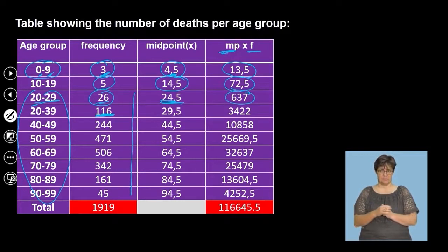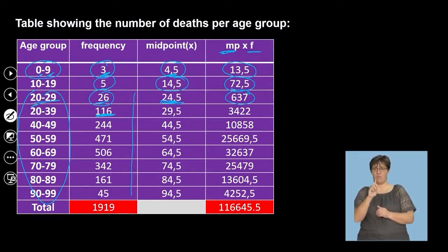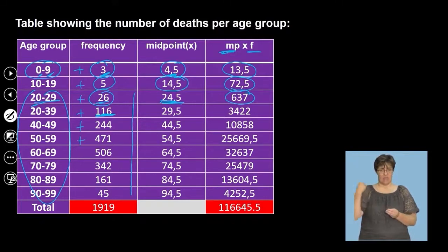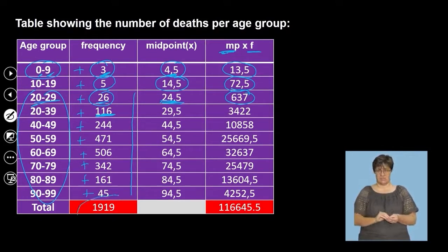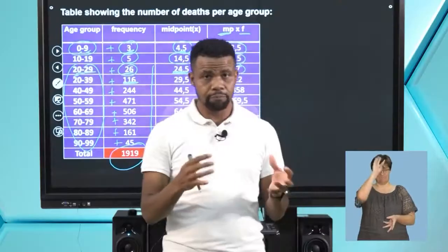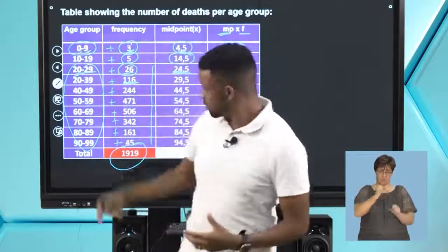The frequency for the 20-to-39 age group is 116 — 116 people died from COVID-19 in that interval. When we add all the frequencies together, we get a total of 1,919. That is the total number of people who died from COVID-19 in this dataset — remember, this covers only about two to three weeks or a month of data collection.